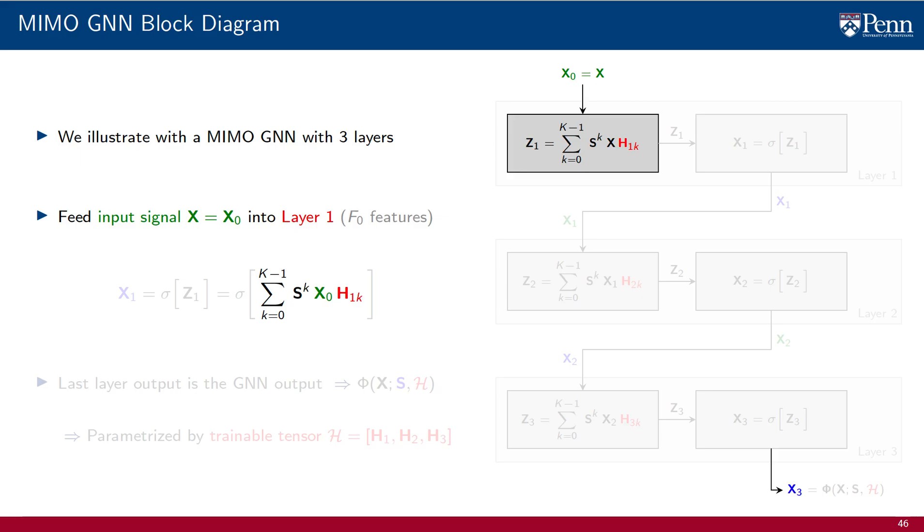This signal is processed with a MIMO graph filter with matrix coefficients H1K. This MIMO graph filter produces an internal output Z1. This is a signal which can possibly have a different number of features. We will denote this number of features as F1. The output of the MIMO filter is now sent through a point-wise nonlinearity. The output of the point-wise nonlinearity is the multiple feature signal X1. This completes layer 1.